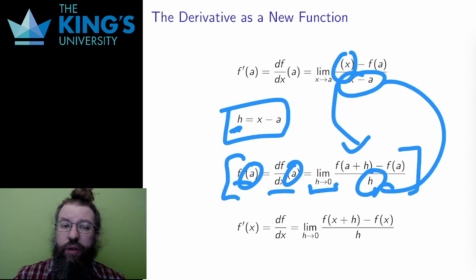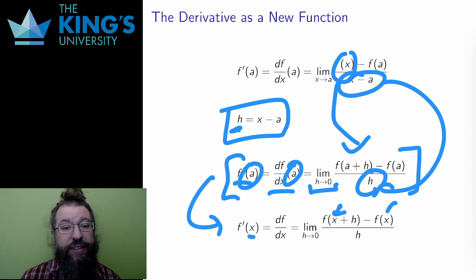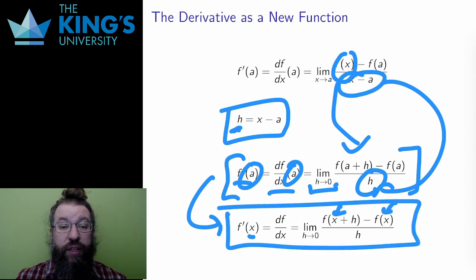However, in this form, I can replace a with x, the generic independent variable. And this allows this last line, f prime of x, or df over dx. This is the derivative as an entirely new function. This is the function which measures the rate of change of the original function at all points.